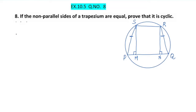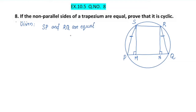When you have two pairs of opposite sides, you can see the non-parallel sides. The other pair of opposite sides are equal — that is SP and RQ are equal. This is the given information.